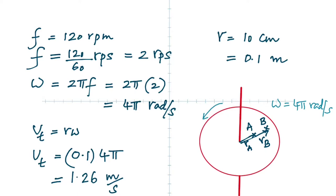But their linear velocities are not the same. Which one has a bigger linear velocity? B, because it's making a bigger circle. The relation is: linear velocity equals R times omega. Although omega is the same, since the radius is not the same, the one with the bigger radius will always have the bigger linear velocity.